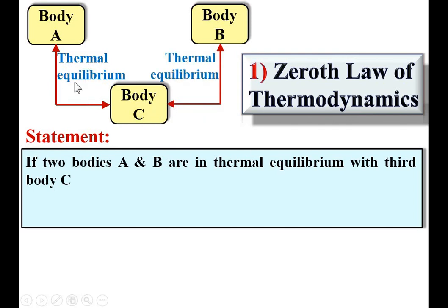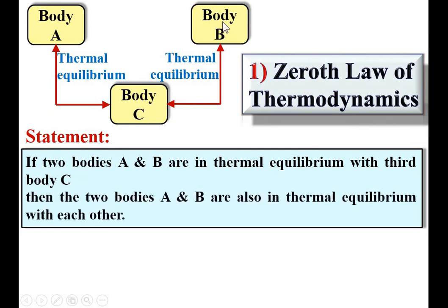Thermal equilibrium means the temperature is the same for both bodies — then this is called thermal equilibrium. Once again, looking at the statement: if two bodies A and B are in thermal equilibrium with the third body C, as shown in this figure, then the two bodies A and B are also in thermal equilibrium with each other, as shown here.